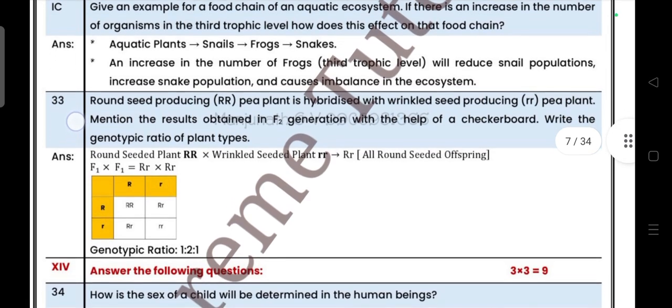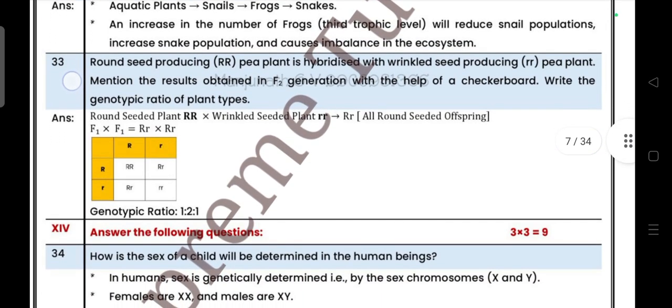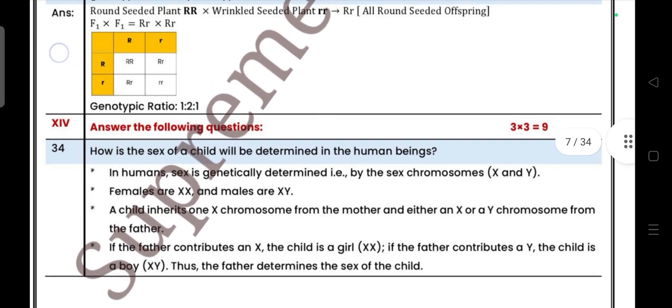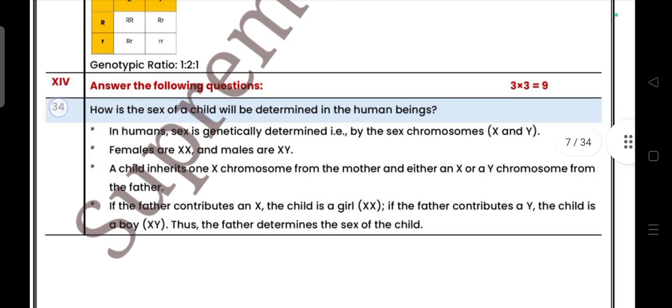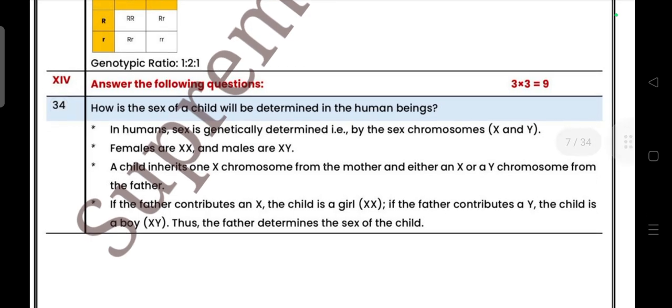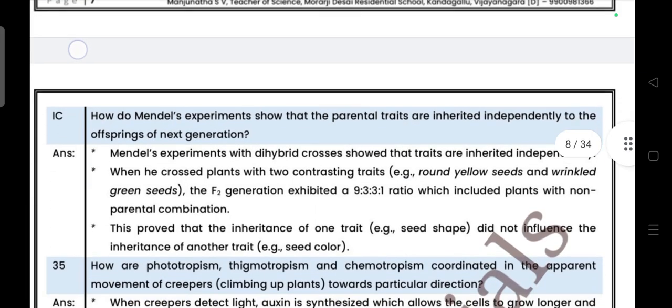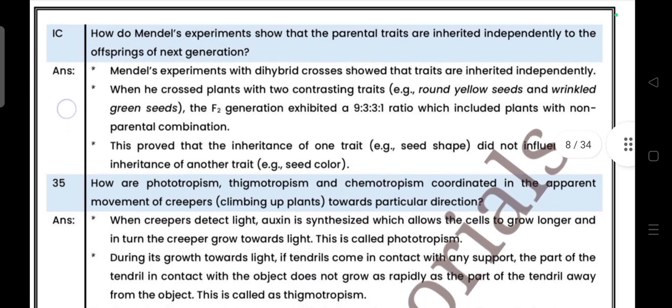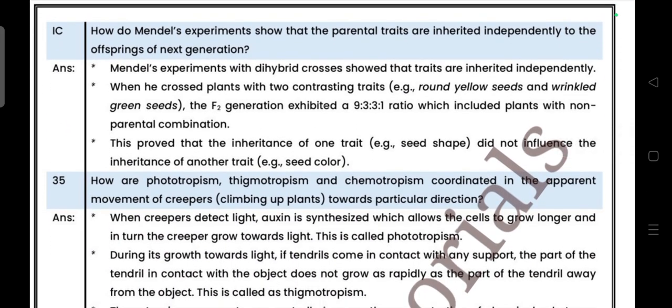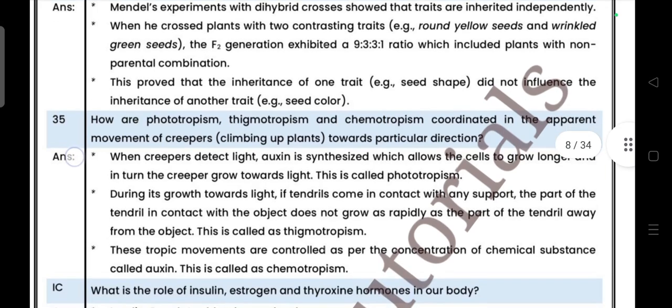Next, round seed producing RR plant is hybridized with a wrinkle seed produced rr plant. Mention the results obtained in the F2 generation. This is the checkbox answer. Next, remark question: how is the sex of a child will be determined in the human being? Take answers. I'm not explaining answer here because it will become more longer. How do Mendel's experiments show that the parental traits are inherited independently to the offspring of next generation?